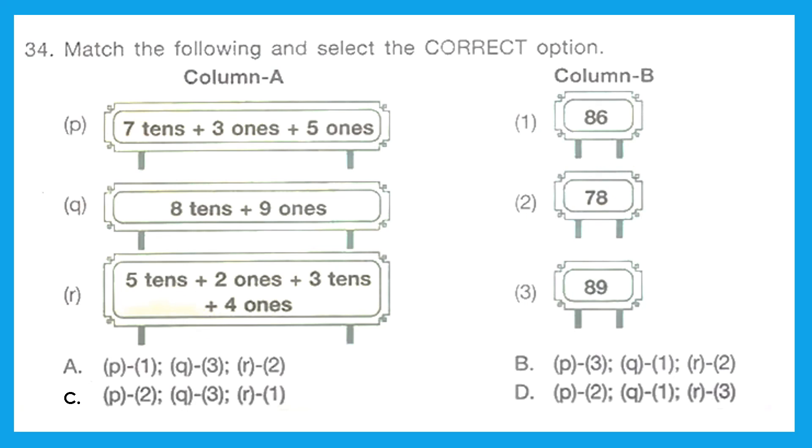Question 34: Match the following and select the correct option. Column A: seven tens plus three ones plus five ones. So 70 plus 3 plus 5—what is it? It is 78. P matches 2. Q is eight tens and nine ones, that is 80 plus 9, 89. Q matches 3. Then five tens plus two ones plus three tens plus four ones. So it is 50 plus 2 plus 30 plus 4, so it equals 86. R matches 1. So the right option is option C: P-2, Q-3, R-1.